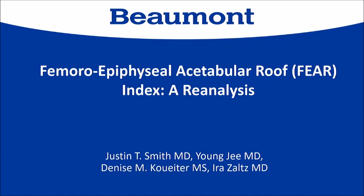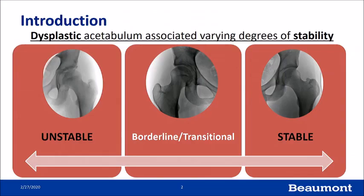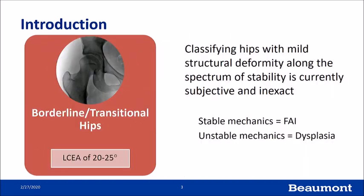I'm going to talk today about a reanalysis of the FEAR index. The dysplastic acetabulum can be associated with varying degrees of instability, and this remains a diagnostic dilemma. We can have dysplastic acetabula that lead to significant instability, and on the other end of the spectrum, dysplastic acetabula that are quite stable. Classifying hips with mild structural deformity along the spectrum of stability is quite subjective and fairly inexact.